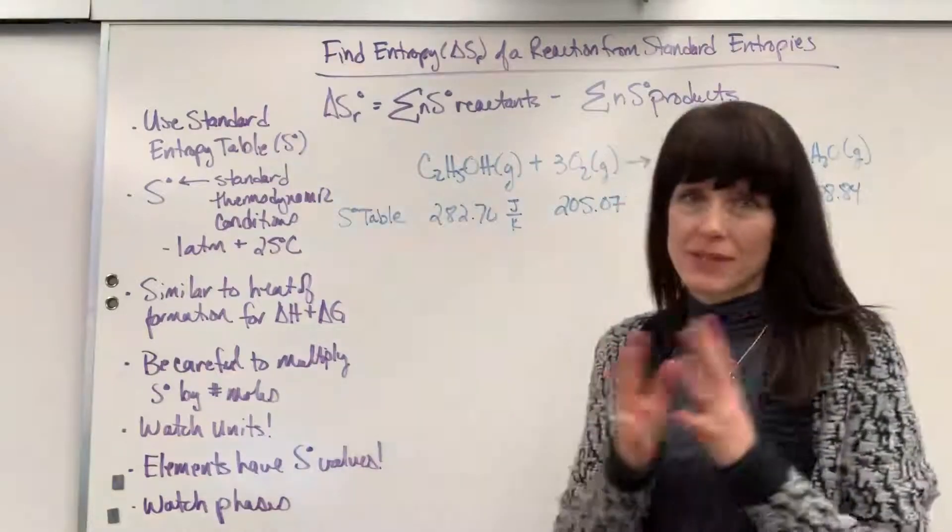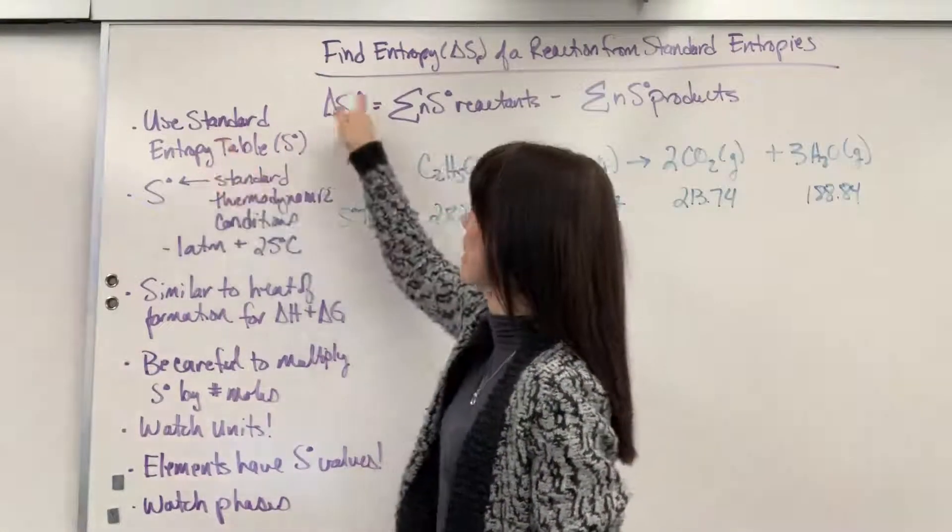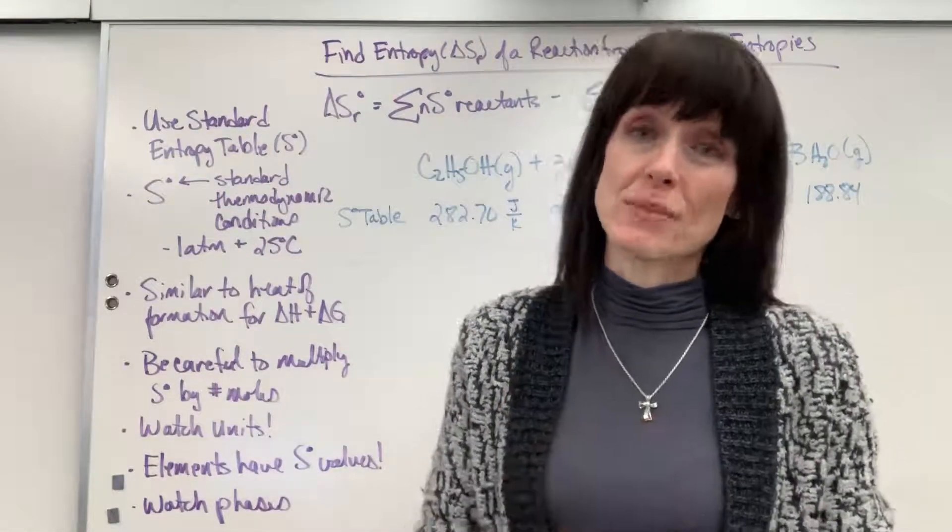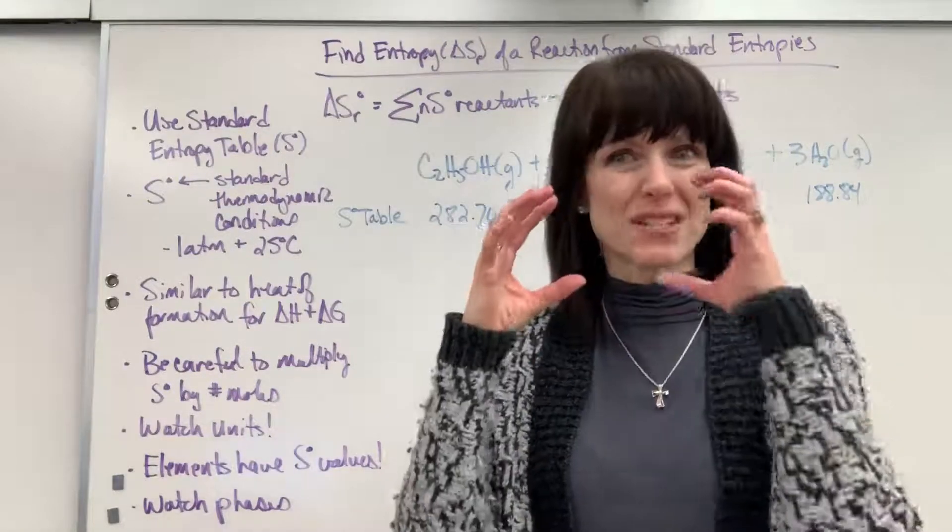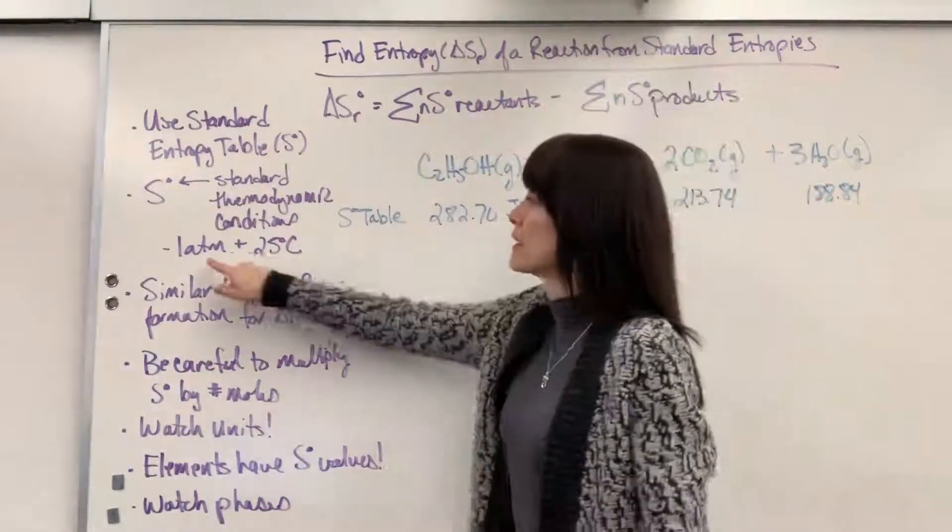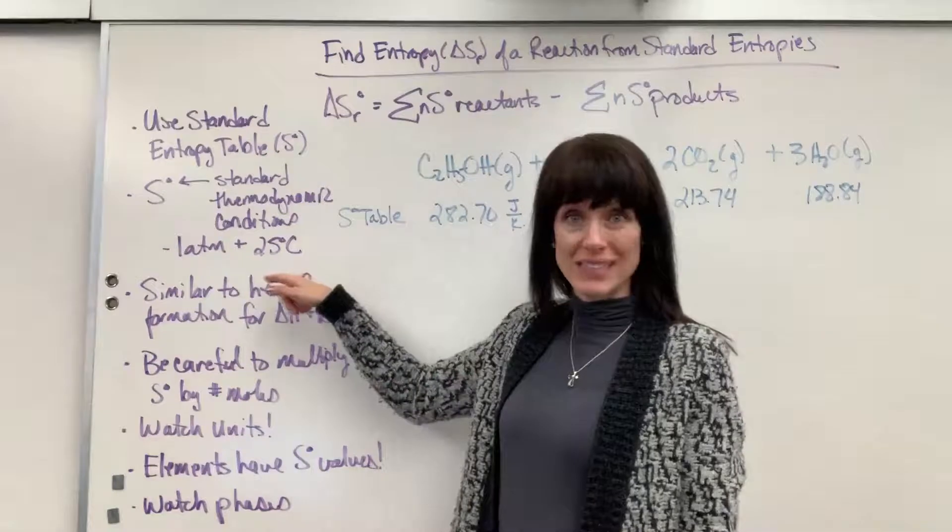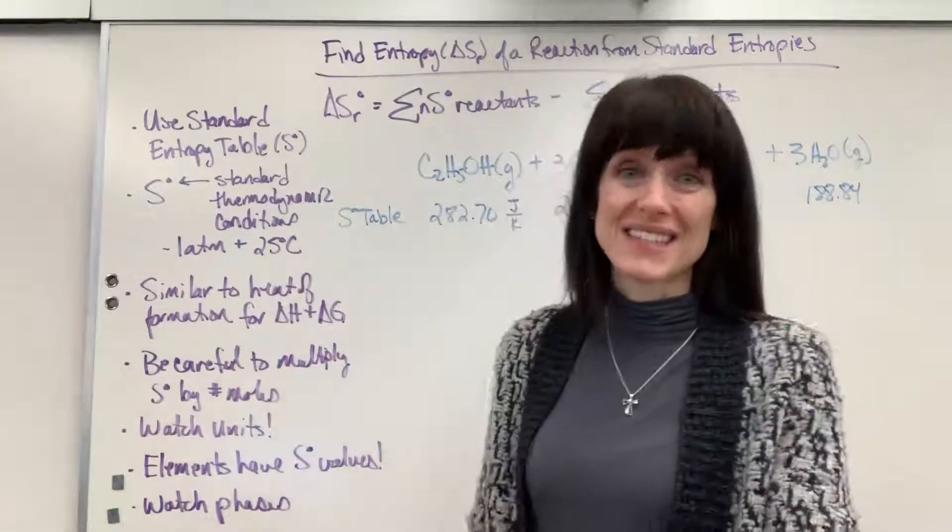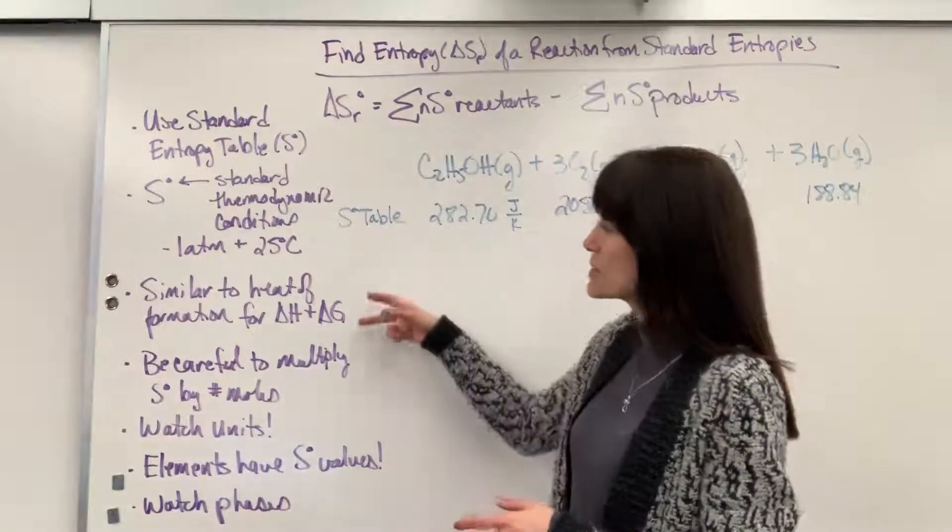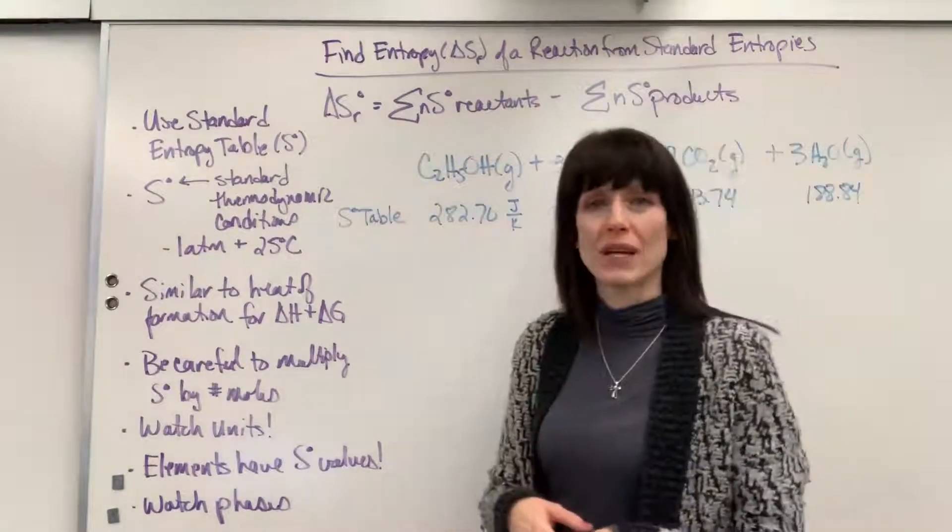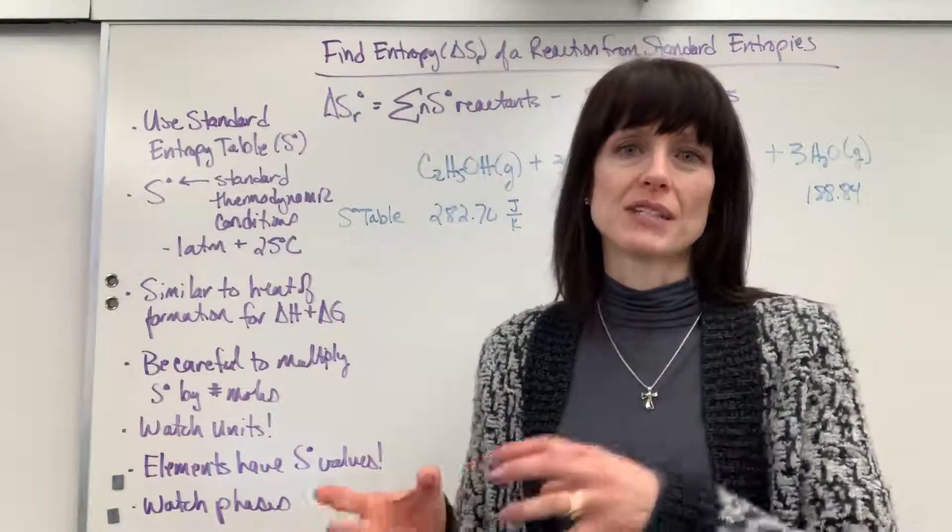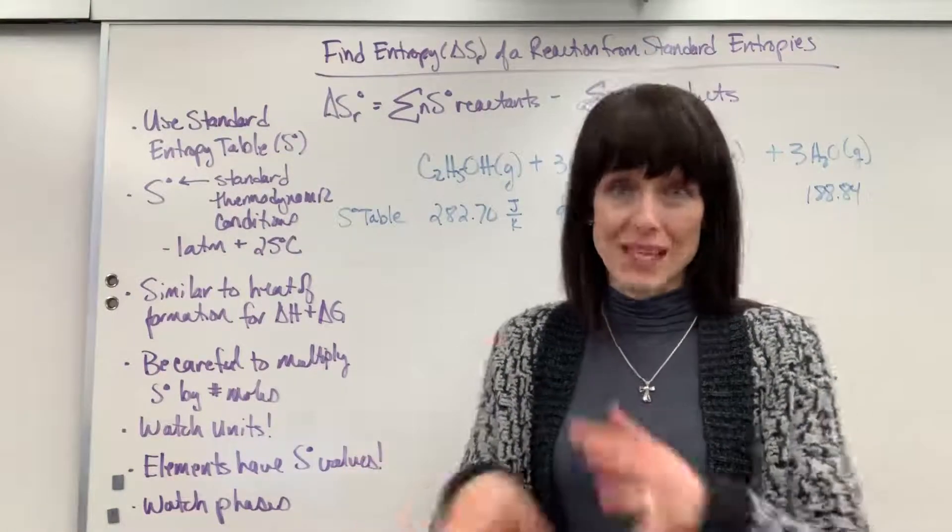Now, a couple of things to point out here. See that little knot that we have up here? That means that we're at standard thermodynamic conditions. So just to remind you that word standard is referring to standard conditions, and for thermodynamics, that's 1 atm at 25 degrees C. So all the values in this table were taken at 1 atm at 25 degrees C. This is very similar to heat of formation, where we can find delta H and delta G using the sum of products minus the sum of reactants. So same principle.